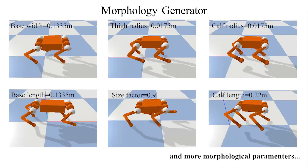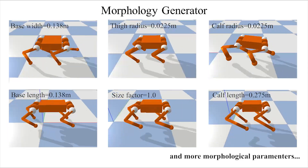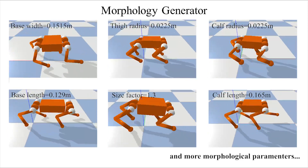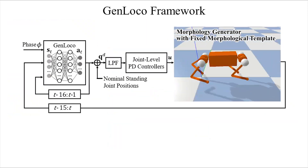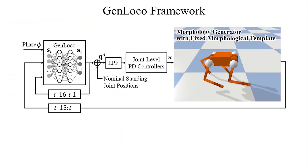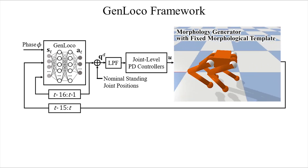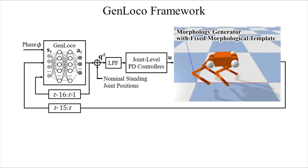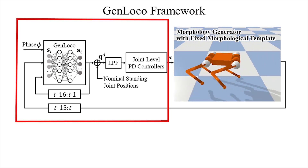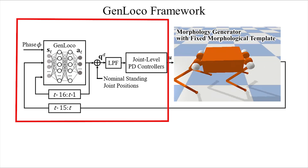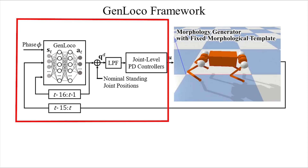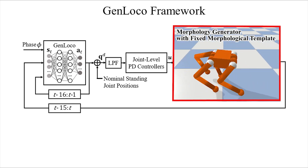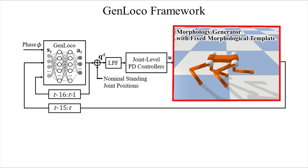Our system generates random morphological variations based on this template, by randomizing the proportions of the various body parts and their respective dynamics properties. We propose a morphology randomization method that reduces the need for robot-specific information during training by procedurally generating a diverse set of morphologies. The controllers are trained through model-free reinforcement learning, but unlike most prior RL frameworks for robotic locomotion, our work explores the setting where the embodiment of the robot can vary.